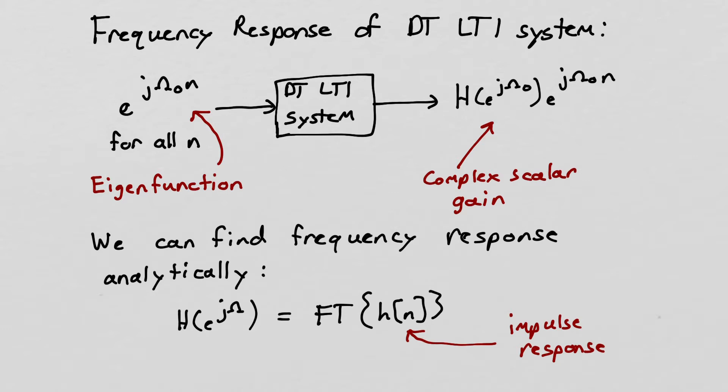And this is all related to the fact that complex exponentials are eigenfunctions of discrete time LTI systems. So we know that if we put in an eigenfunction, we get out that same eigenfunction scaled by a scalar gain.